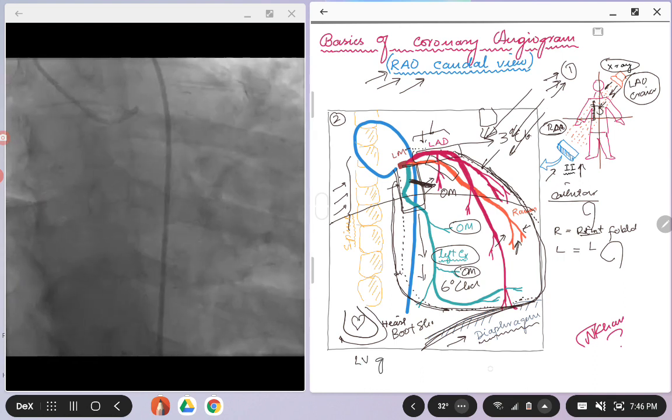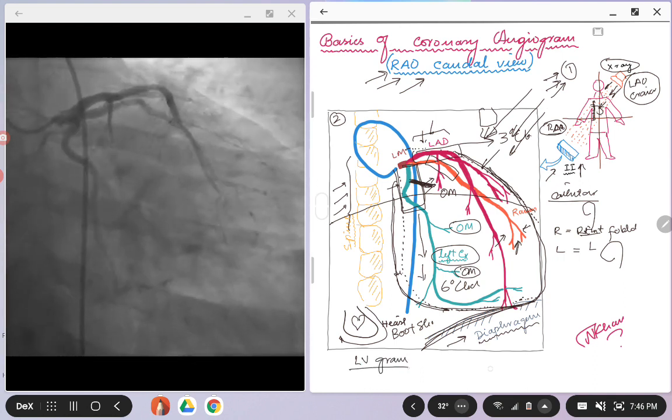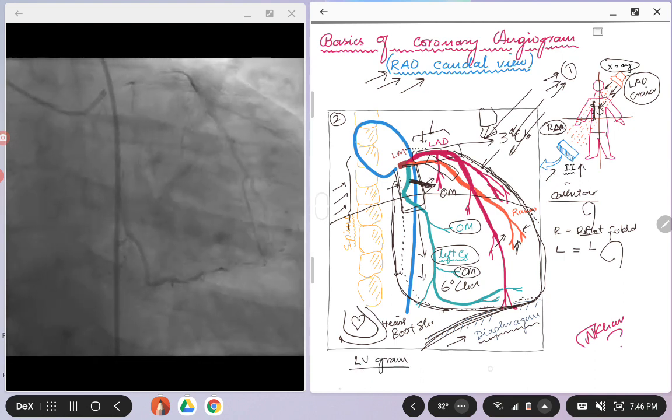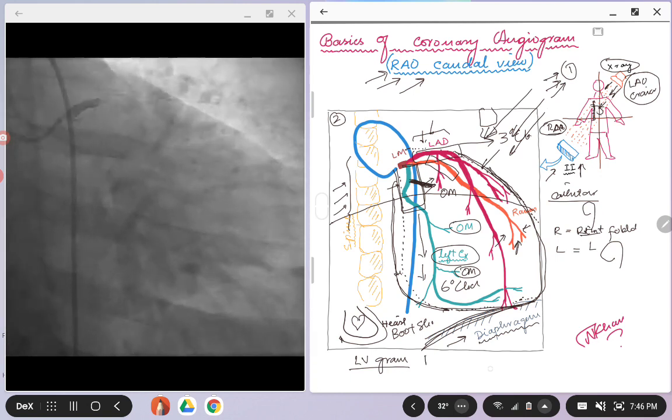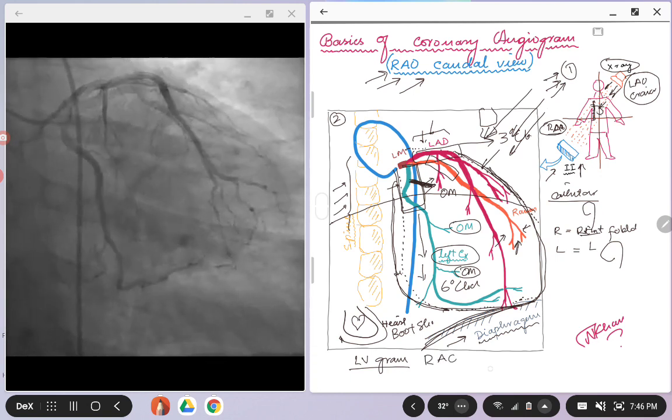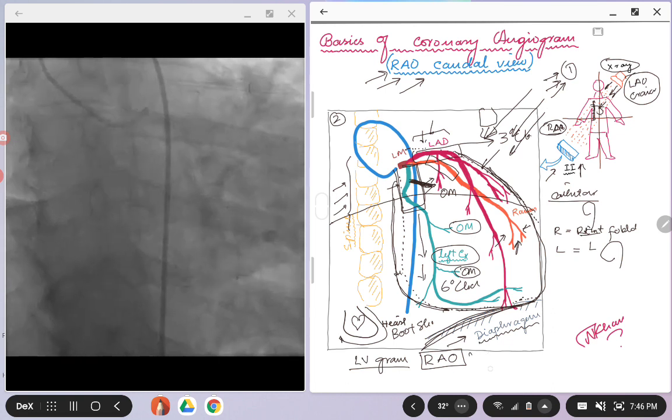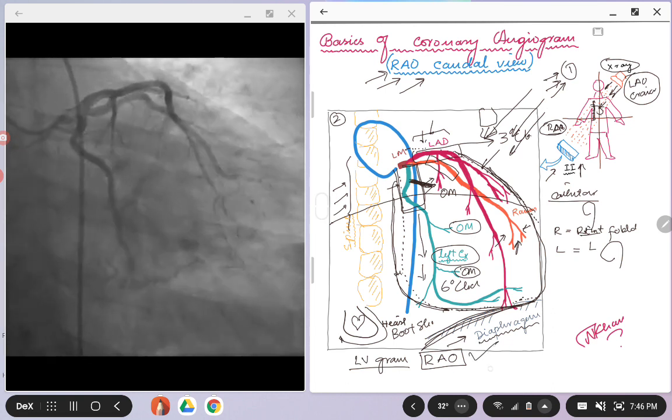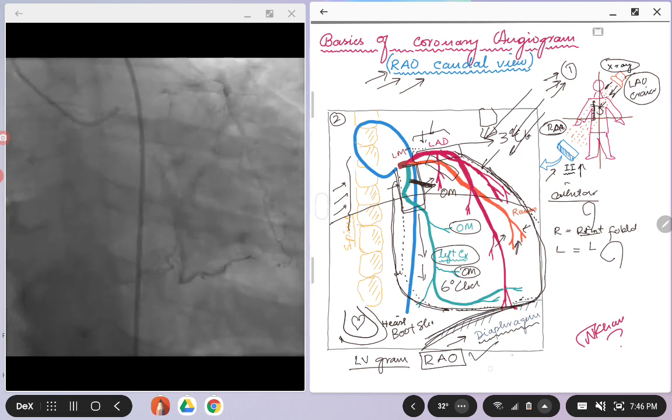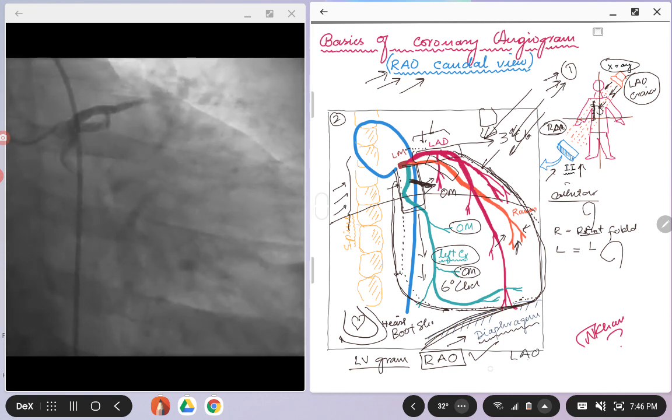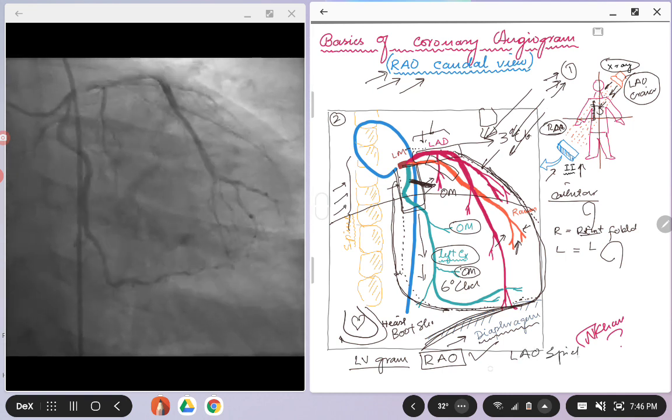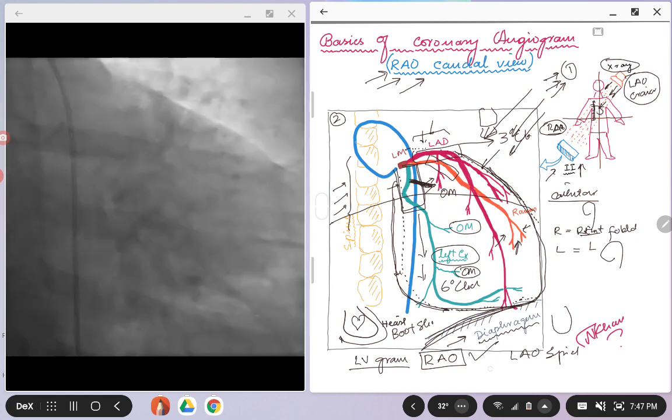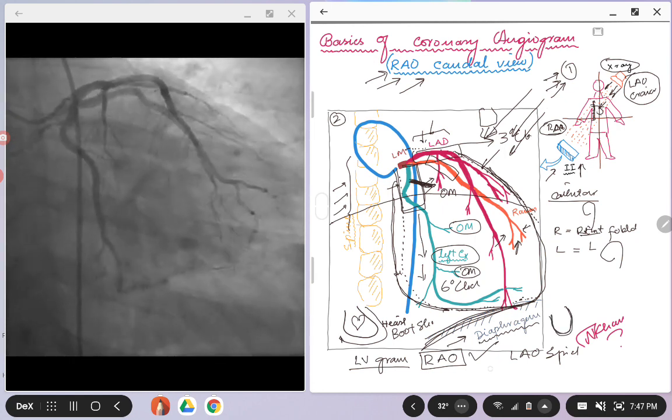So what it signifies is that if you want to do an LV gram, for example the patient comes in in STEMI and you want to see the wall motion abnormalities, the RAO views will be good for looking at the wall motions.